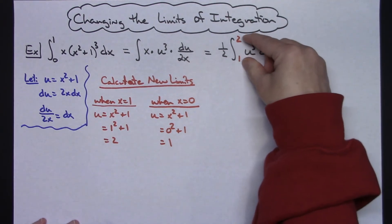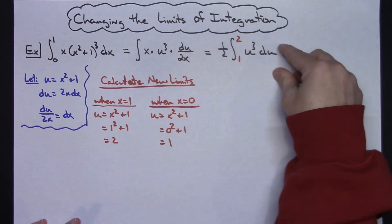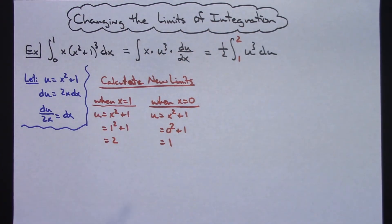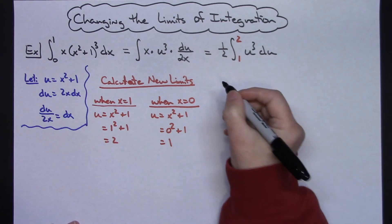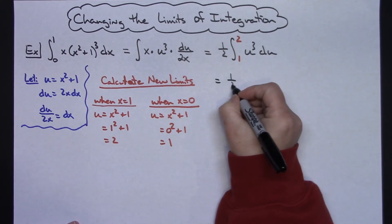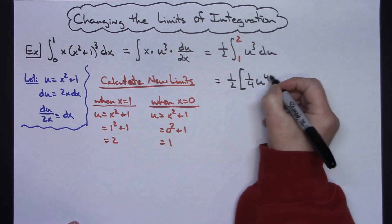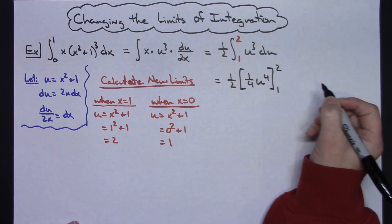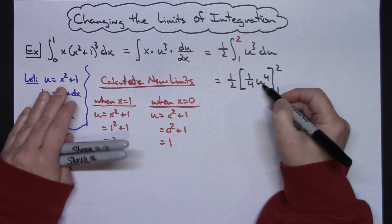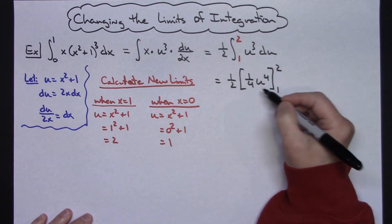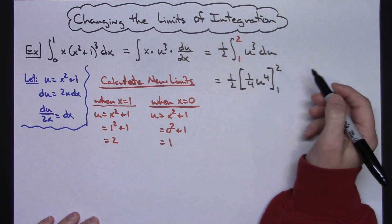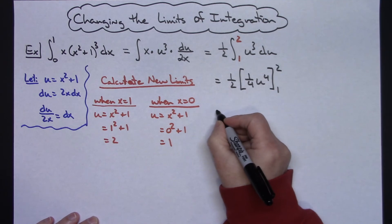So at that point, then you have changed the limits of integration. These are in terms of u, these are in terms of x, and now we can finish this out. And it's going to be a lot quicker and a lot easier to do this now, because when I integrate here, I'm still going to have that 1 half out in front. That's going to become a 1 fourth u to the fourth. And then I can immediately put that 1 and 2 on there. So I don't have to put the more complicated expression back in for u. I can immediately jump in and do the numeric calculations here.